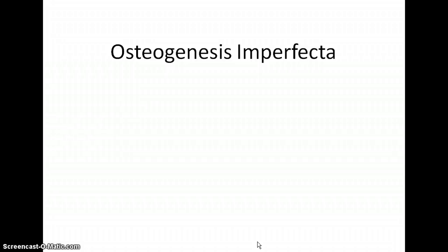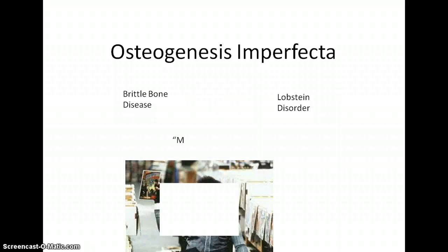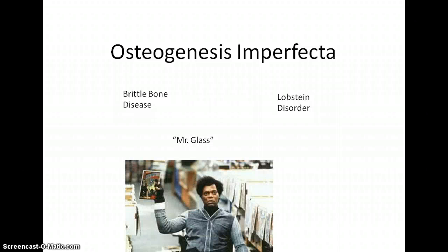In today's video, I'll be talking about Osteogenesis Imperfecta, also known as Brittle Bone Disease. It affects an estimated 20,000 people in the United States. It has also been used as a pop cultural reference, such as Mr. Glass from Unbreakable.